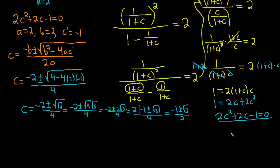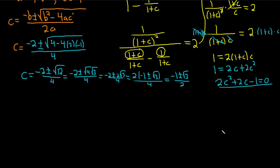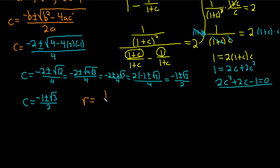So we have two possible values of c. We need to figure out which ones work. Since r = 1/(1 + c) and this is a convergent geometric series, the absolute value of r must be less than 1 — that's key. We know it's convergent because the series equals 2. So let's take both values of c and plug them into r to see which ones work. Let's first try c = (−1 − √3) / 2.